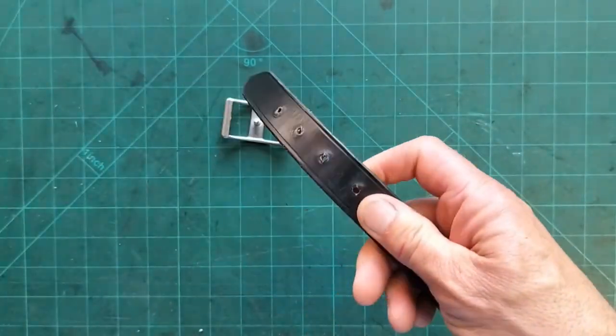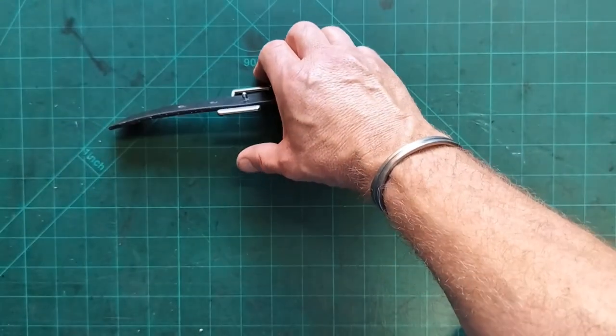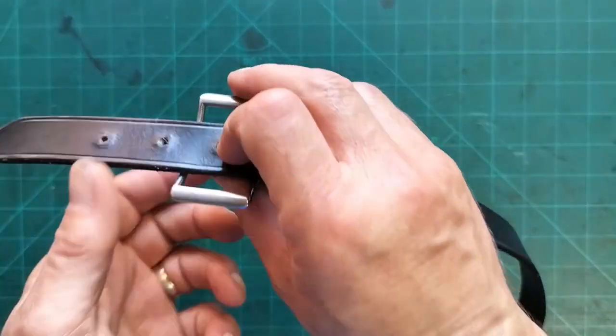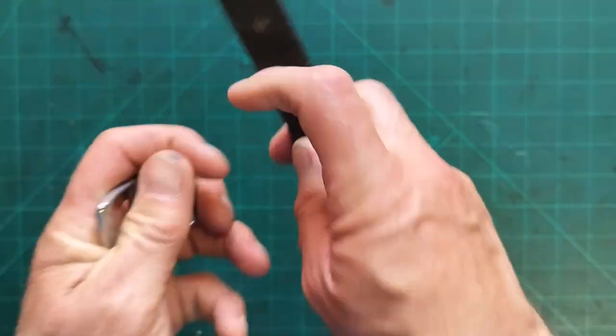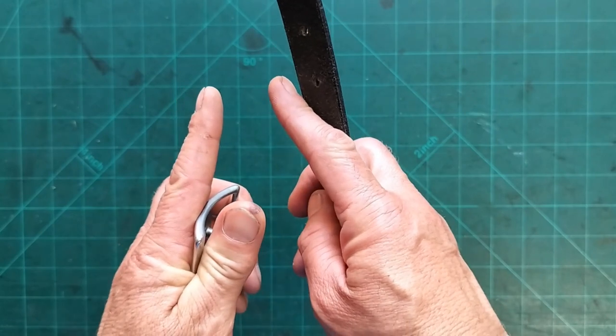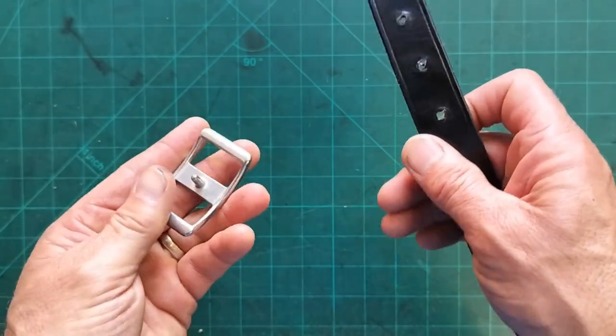And the reason being is when we put this on, it's going to press through like that. And as it presses through there, it's easier because the hole's slightly wider because most punches are cone-shaped, so they're a bit wider as they go further in. So it just makes it easier to press that first one on.